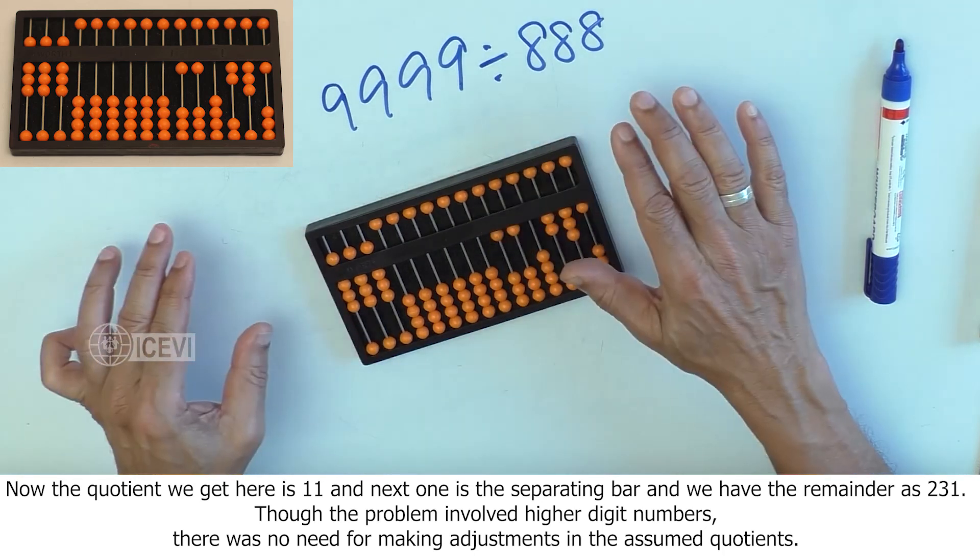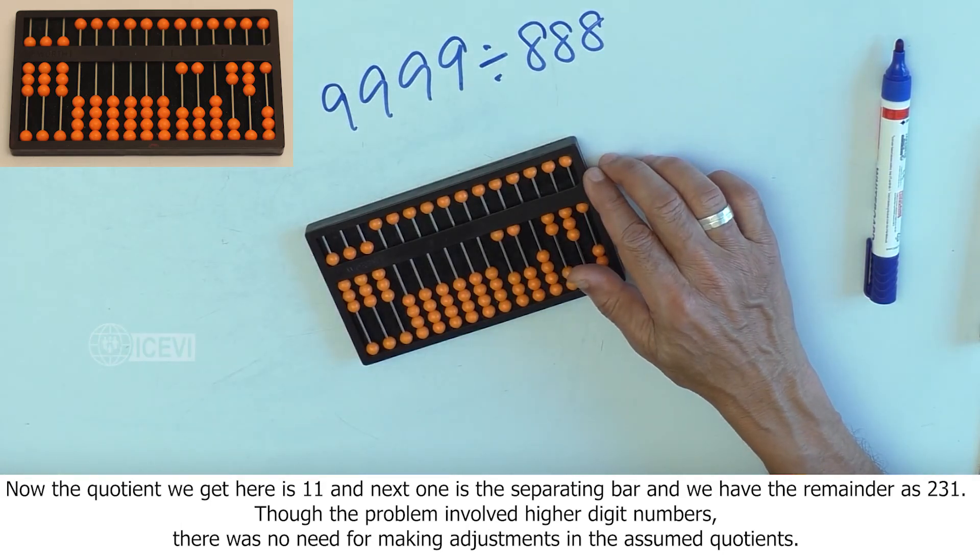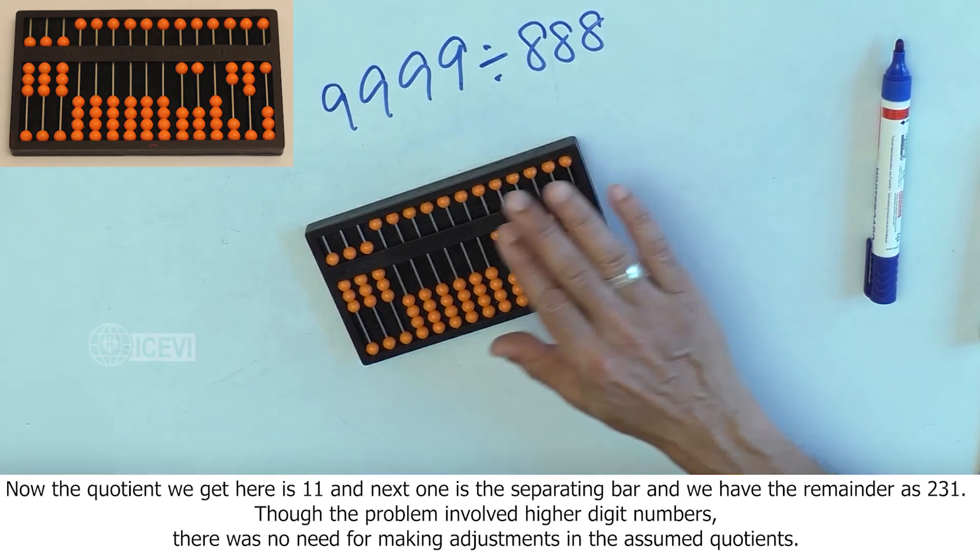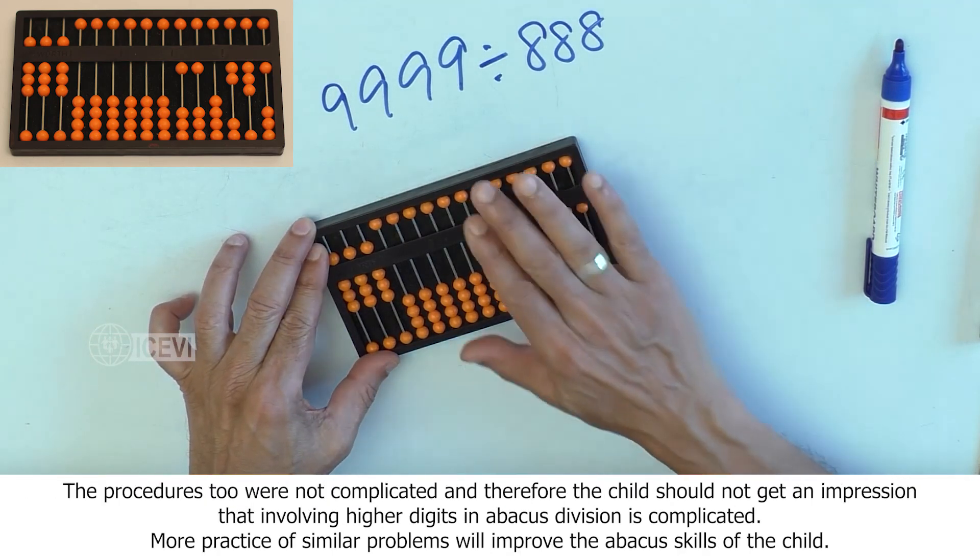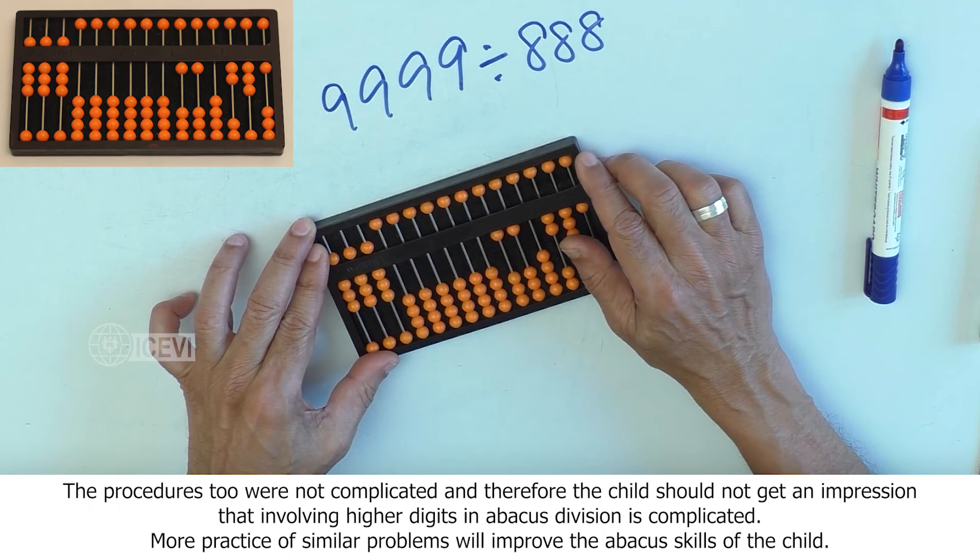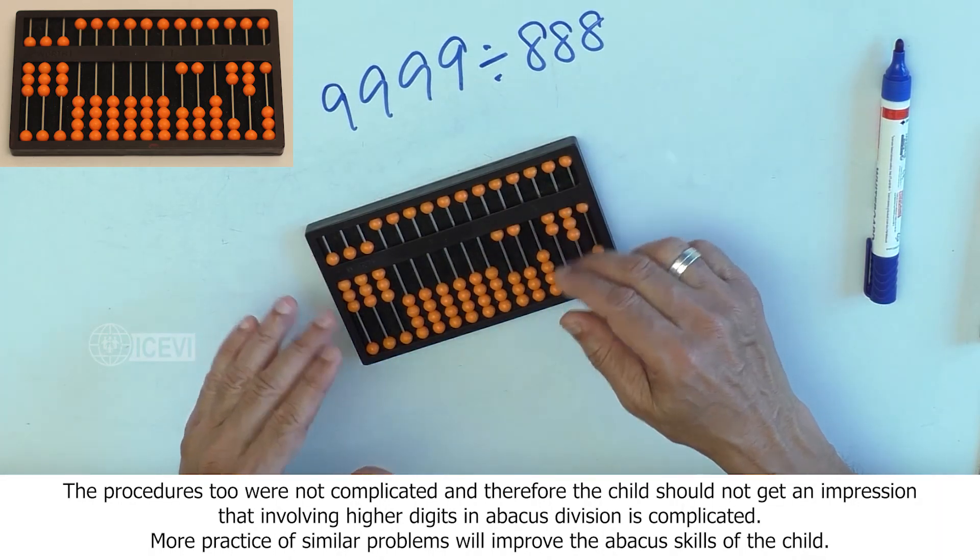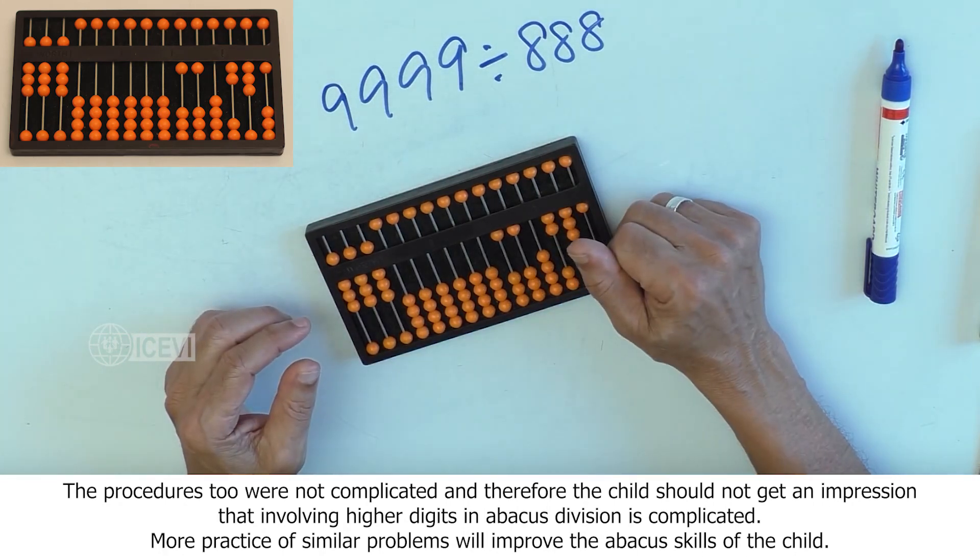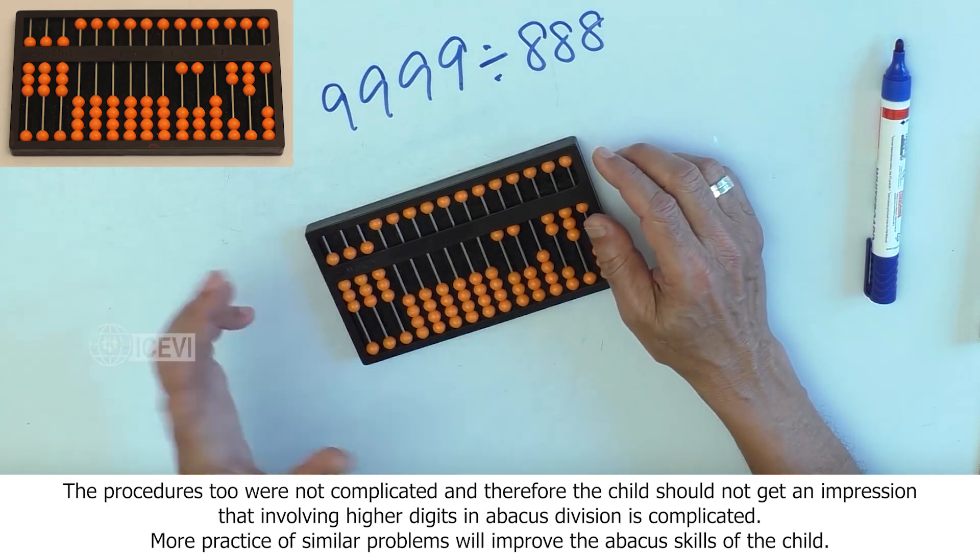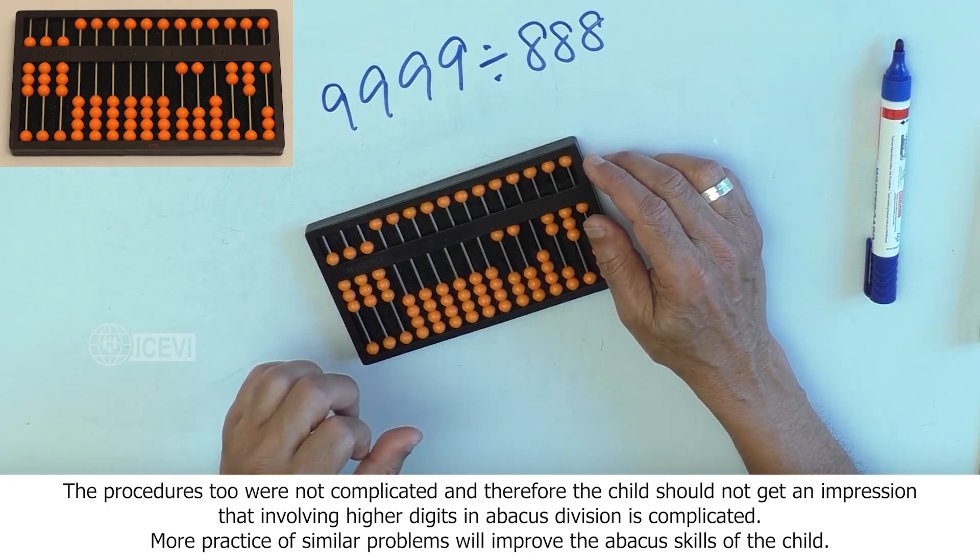Though the problem involved higher digit numbers, there was no need for making adjustments in the assumed quotients. The procedures too were not complicated, and therefore the child should not get an impression that involving higher digits in abacus division is complicated. More practice of similar problems will improve the abacus skills of the child.